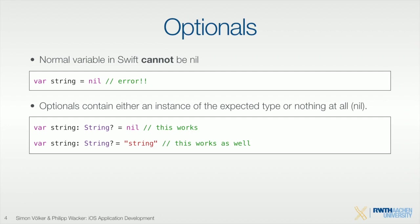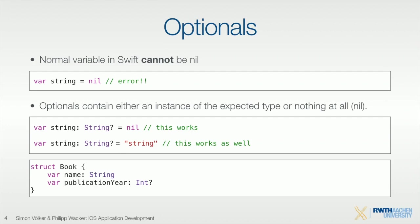If you use an optional variable that is set to nil, your application will just crash, because the compiler assumes every time you use it, there's a value in there. You can ask if nil is in there using an if condition, but if you directly use the variable without checking, the system cannot do anything. The compiler will tell you that you didn't check if there's a value in the optional, and that you first have to unwrap it.